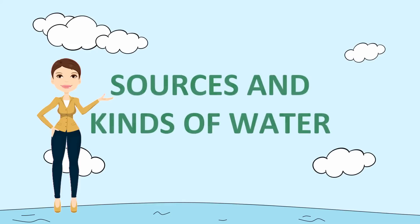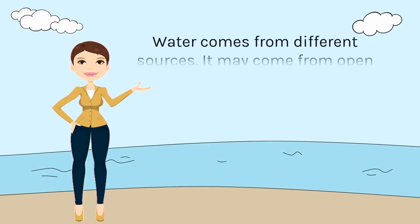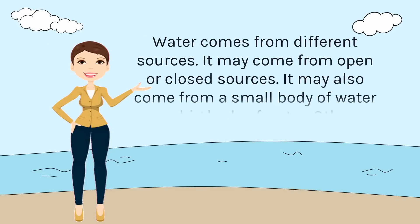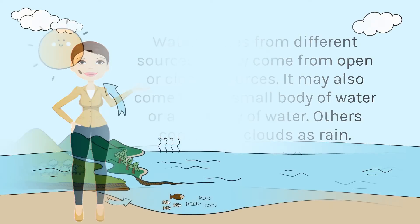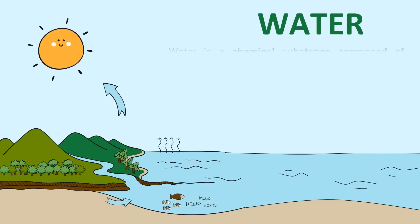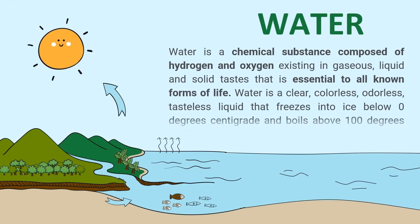What are the sources and kinds of water? Are you familiar with them? Water comes from different sources — it may come from open or closed sources. It may also come from a small body of water or a big body of water. Others come from clouds as rainwater. Water is a chemical substance composed of hydrogen and oxygen, existing in gaseous, liquid, and solid states that is essential to all known forms of life.